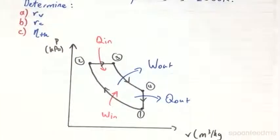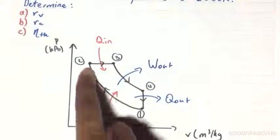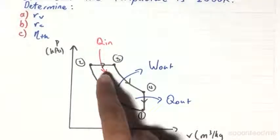So our PV diagram will look something like this. We have our isentropic compression, process 1, 2, and that is when we will be inserting work into the system.